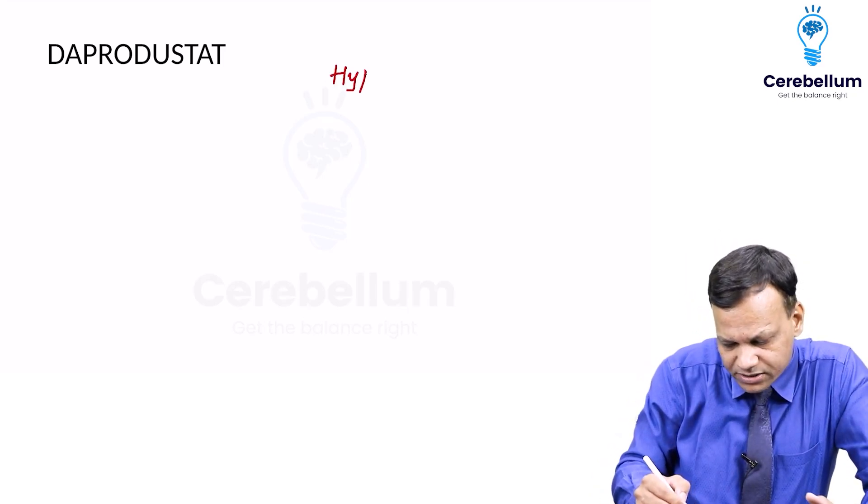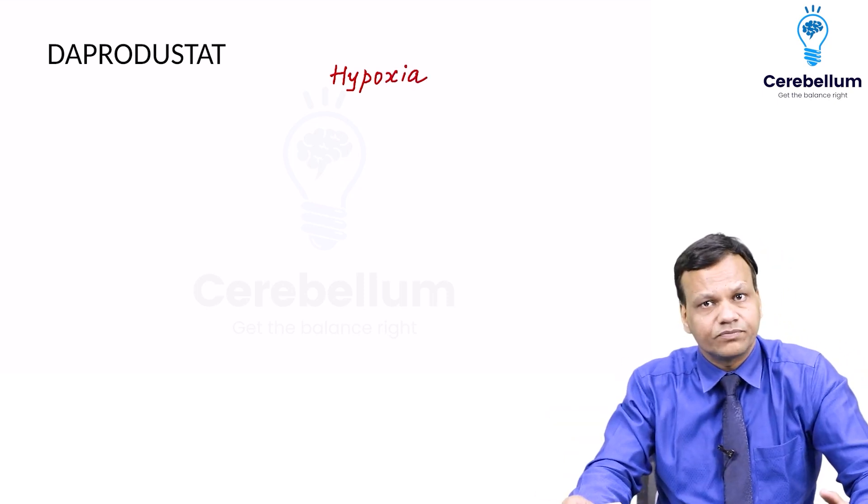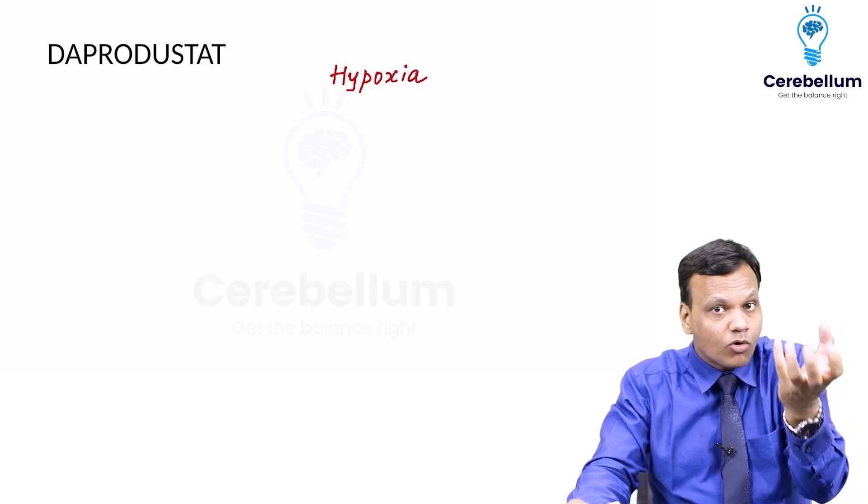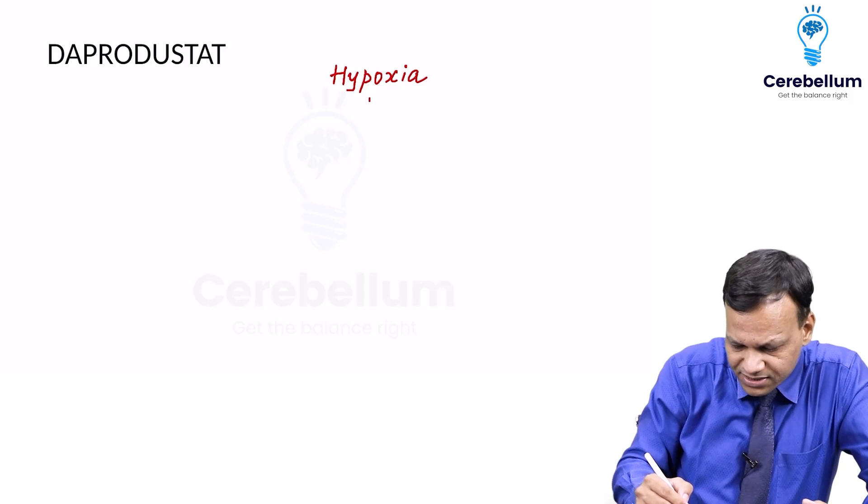Whenever hypoxia occurs in the body, there is less oxygen. When hypoxia is there, we want more oxygen carrying capacity. What do we want? We want hemoglobin. So how is hemoglobin synthesized?